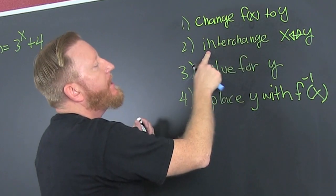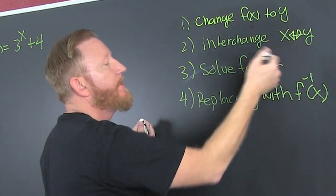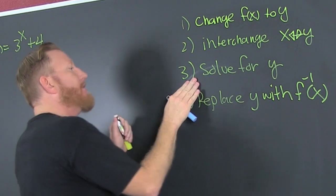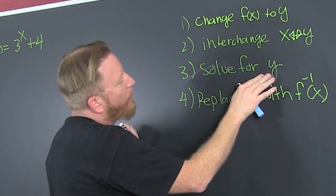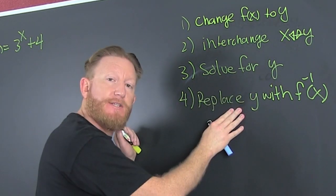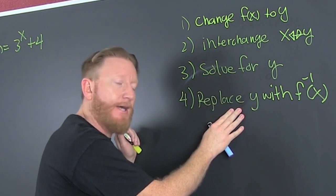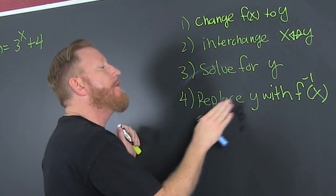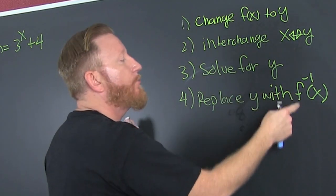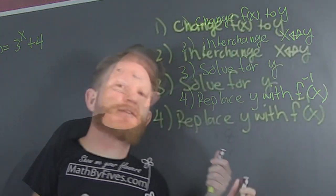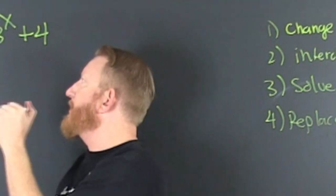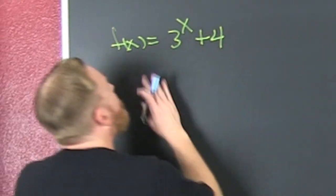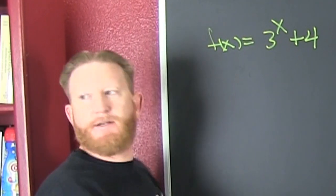Then we're going to interchange x and y. And we're going to solve for y. Then the last step — this is the one you're going to forget. You forgot it seven years ago, you're going to forget it now: replace y with the inverse. And we're going to use that four-step process to find the inverse.